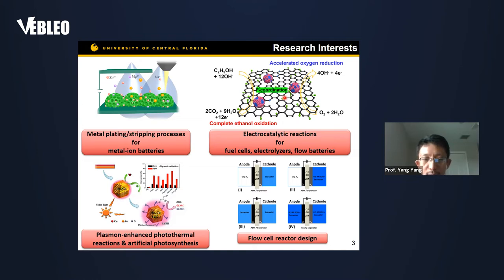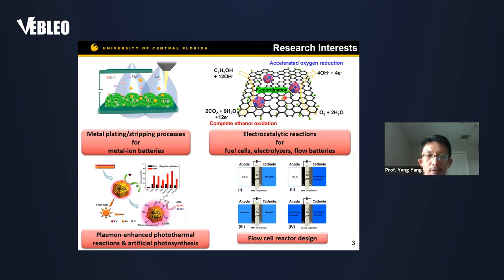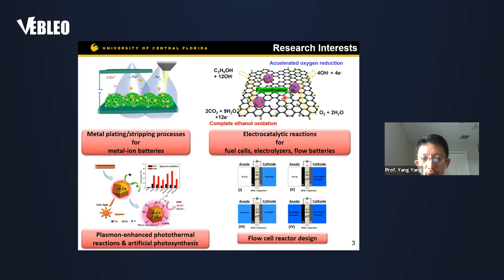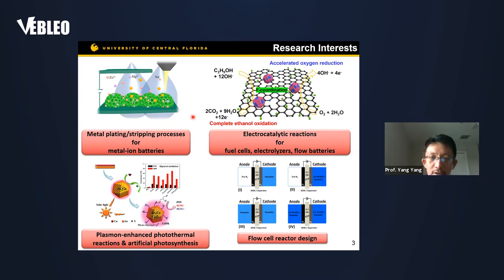We are also very interested in studying possible enhanced artificial photosynthesis to convert CO2 to value-added chemical fuels, or upgrading lower-value chemicals to higher-value chemicals via enhanced photosynthesis. We are also working on reactor designs for flow batteries, electrolyzers, and fuel cells. Those are the major research directions ongoing in my lab.